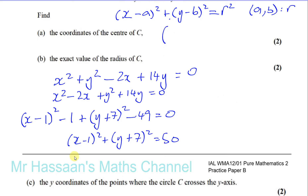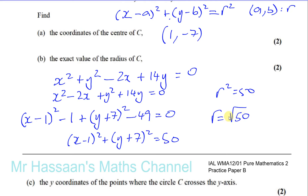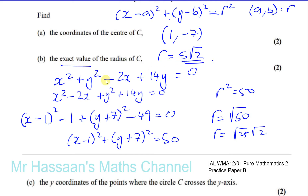This gives us (x minus 1) squared plus (y plus 7) squared equals 50. The center of the circle is the values that make each bracket zero: x equals 1 and y equals negative 7. The radius is the square root of 50, which simplifies to the square root of 25 times the square root of 2, giving 5 root 2. That's the exact value of the radius without rounding.